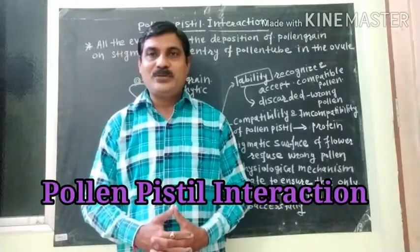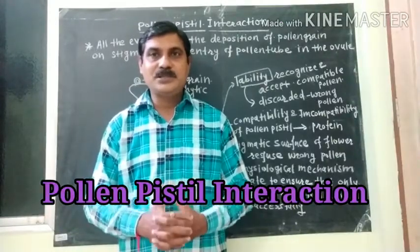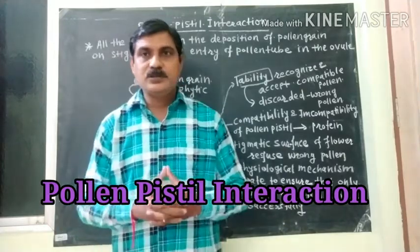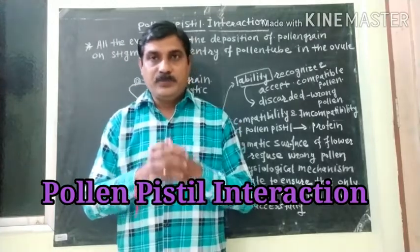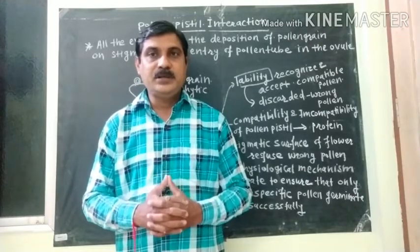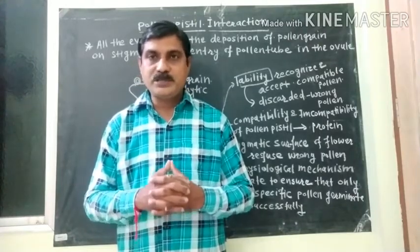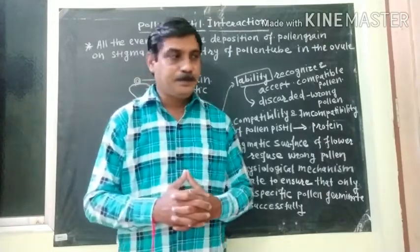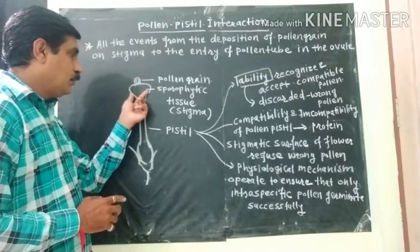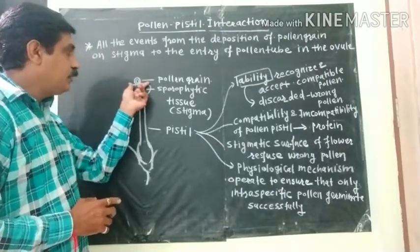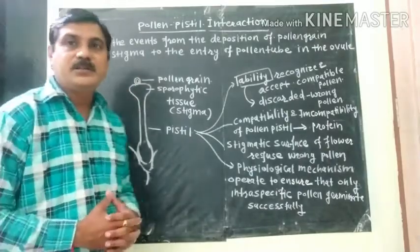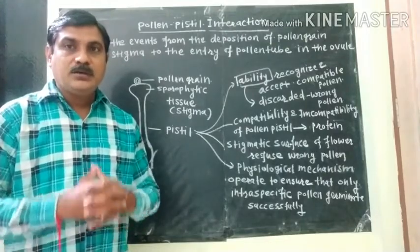Today we have to learn about the pollen-pistil interaction. First of all, where does this pollen-pistil interaction take place? It takes place between the sporophytic tissue of the stigma and the pollen grain. This interaction begins with pollination.